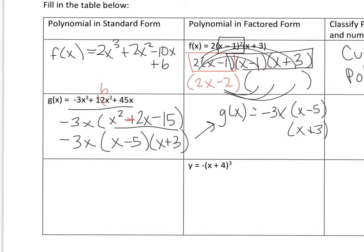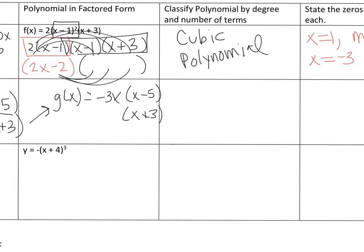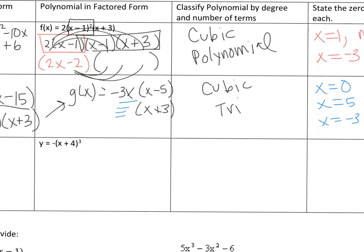It's nice to factor it because then you can actually see the zeros. Classify the polynomial: it is a cubic and it has three terms, so it's a trinomial. The zeros are at 0 — don't forget, if you factor out an x, it's going to be x equals 0 — x equals 5, and x equals negative 3. These are all multiplicities of 1.